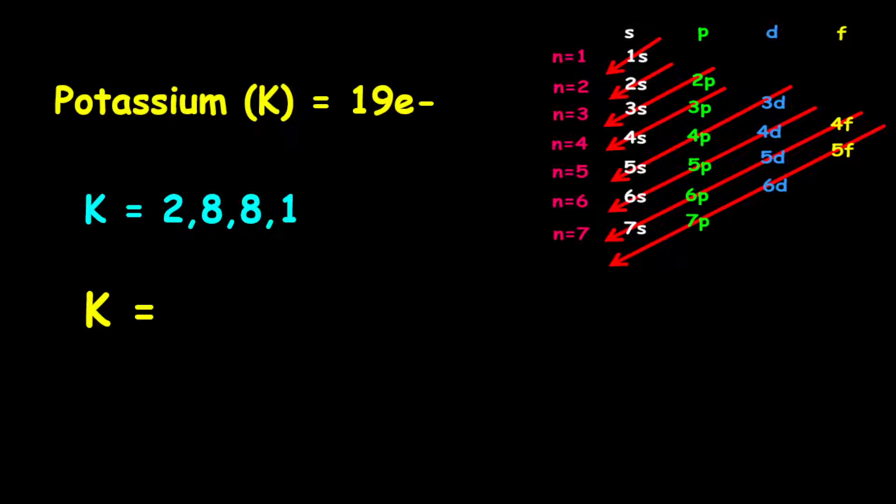For the orbital filling electron configuration, it is given as 1s2, followed by 2s2, then we go to 2p6, then we go to 3s2, then we go to 3p6.